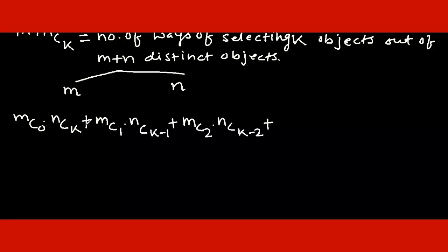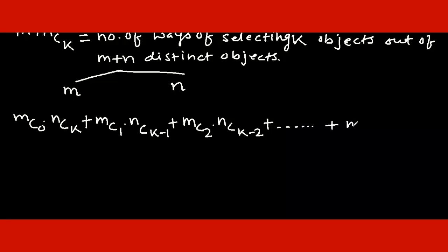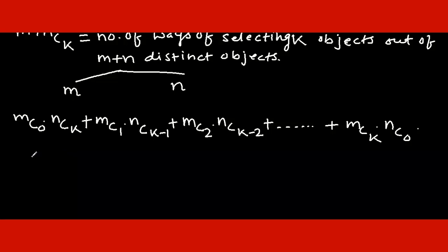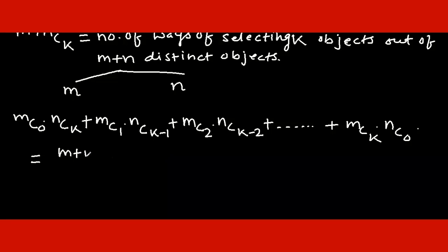We use addition because these cases are 'or' cases — either we are selecting this way or that way, and they are not dependent on each other. If we proceed this way, finally we will be selecting k objects from the first group itself and no objects from the second group. In total, at each step we are selecting k objects from m+n objects.